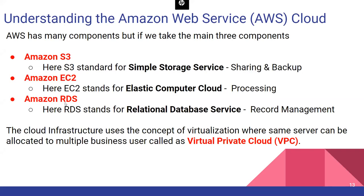Third is RDS — Relational Database Service. This is just like Oracle or MySQL where you manage relational data and records. So the three core AWS services are S3 for storage and backup, EC2 for computing power, and RDS for relational database management.